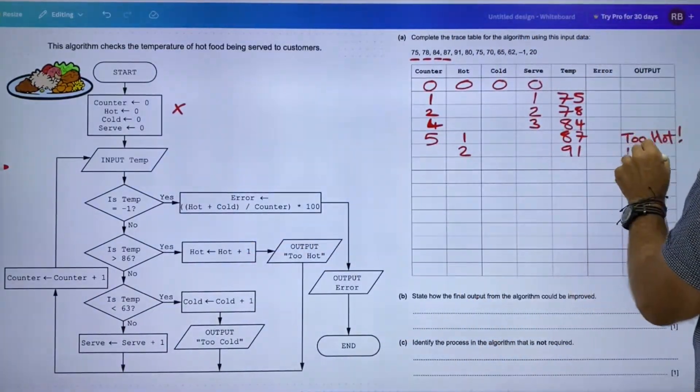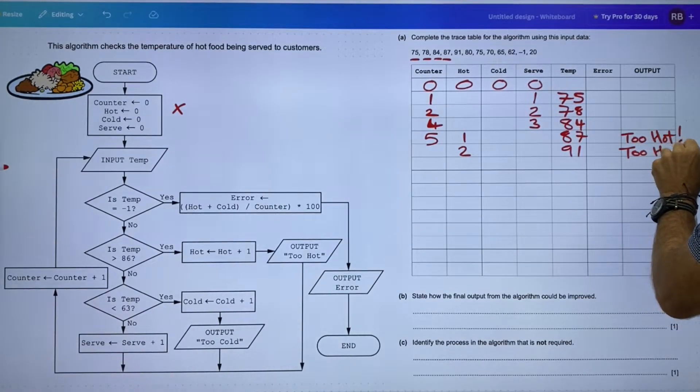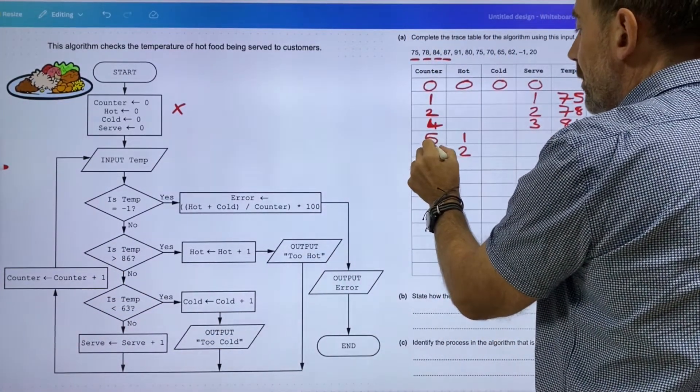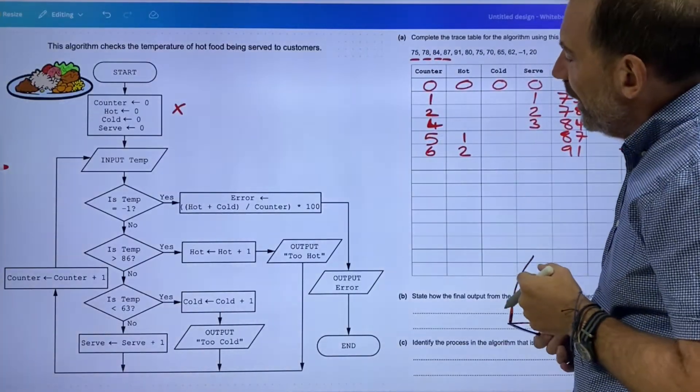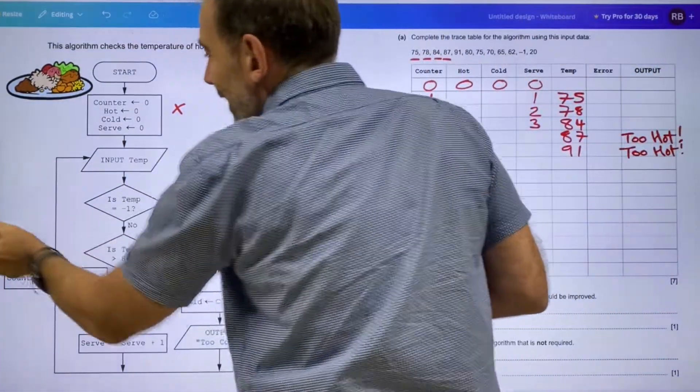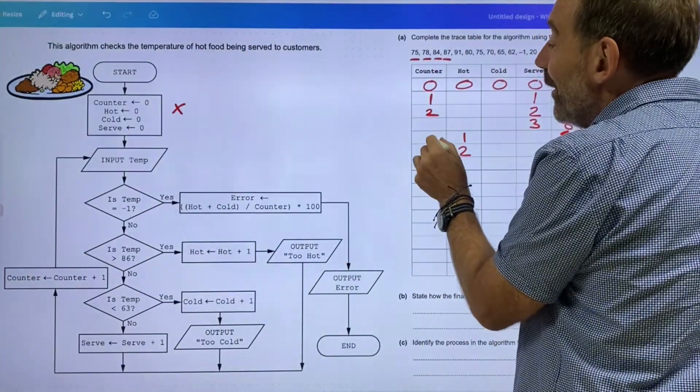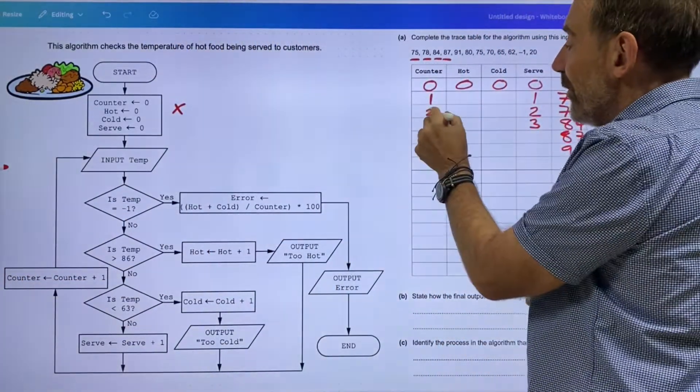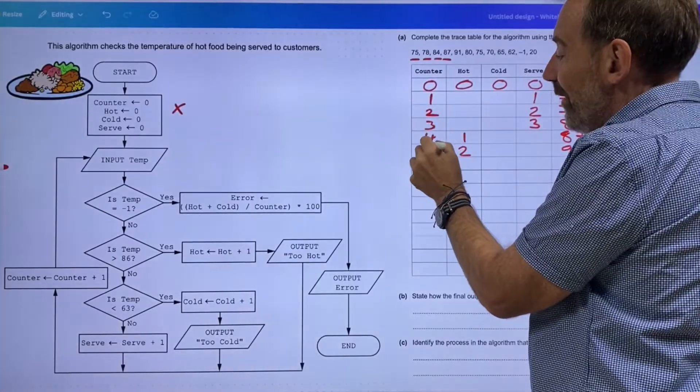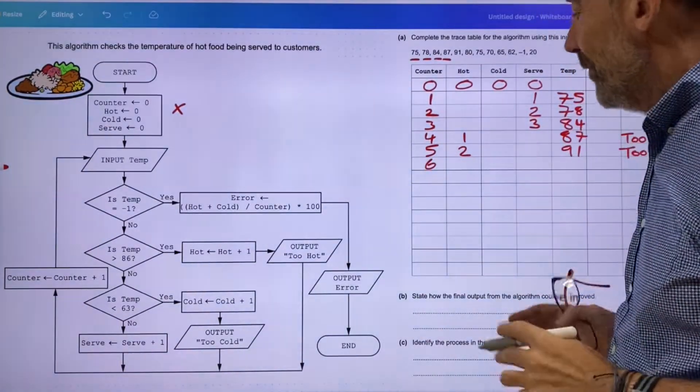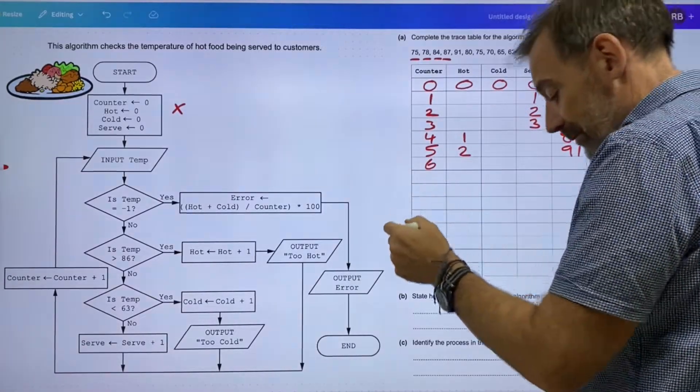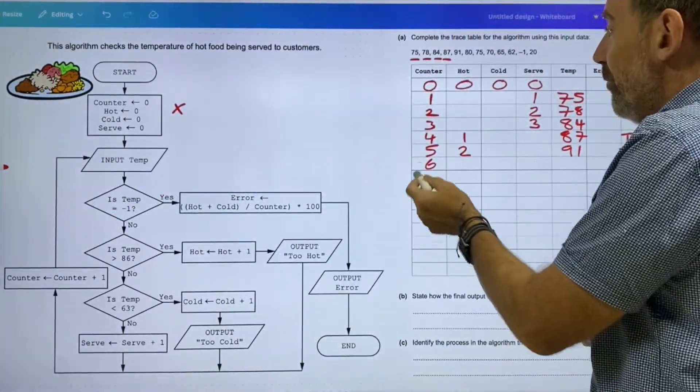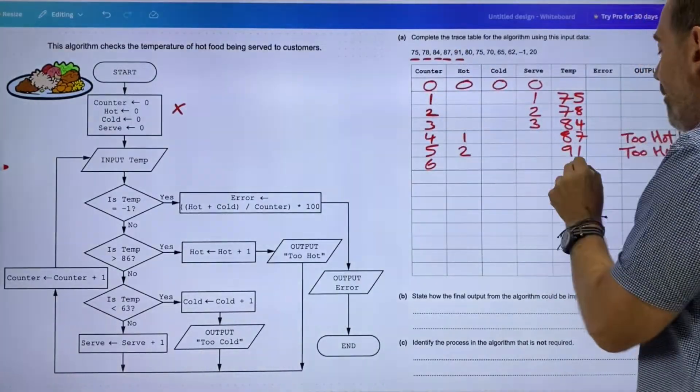For my word, then from there it's coming back around. Counter equals counter plus one—five. So there's one we haven't served. We didn't serve that meal; that meal was too hot. So we can see sort of what's happening now. We've got another one here, 91, which is going to be higher. Inputting temperature—is it greater than yes? It is. So hot gets assigned hot plus one. Output 'too hot'. Counter equals counter plus one.